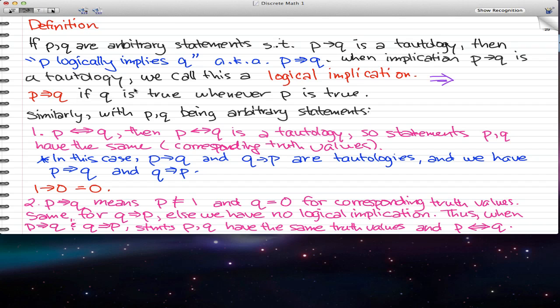This only happens if Q is true whenever P is true. Because what if we had 1 implies 0? Well, that will give us a false or that will give us a 0, not a 1. That's a 0. When we have a false, we can't have a tautology.